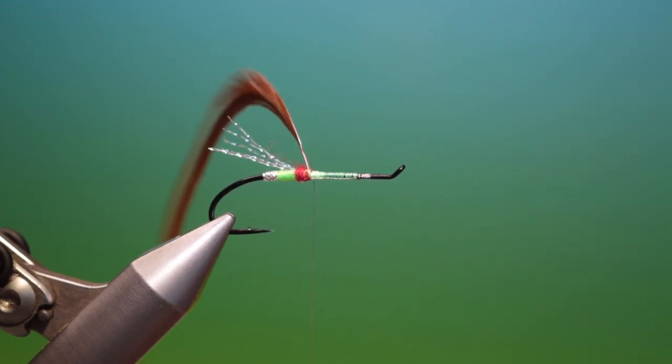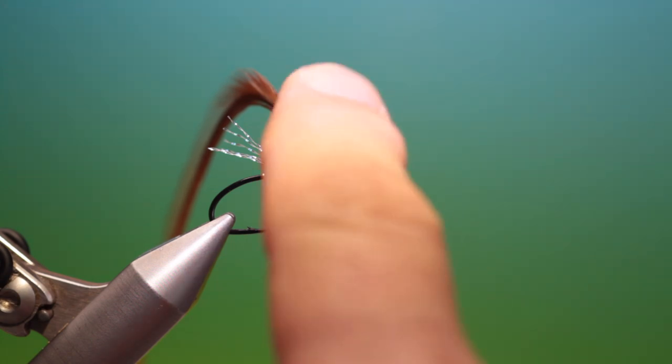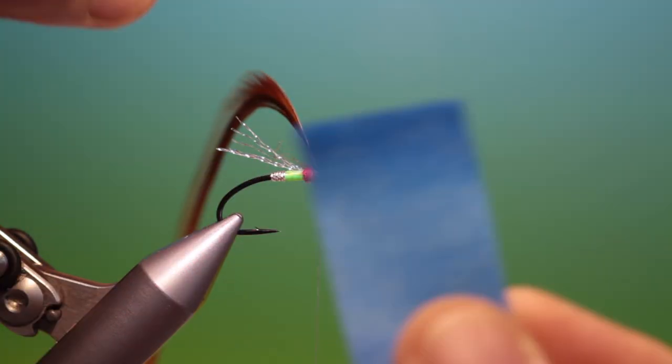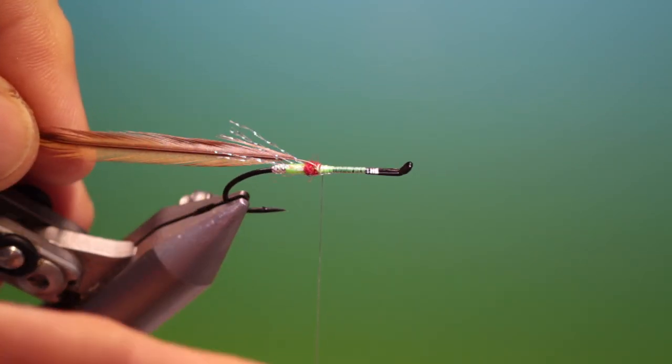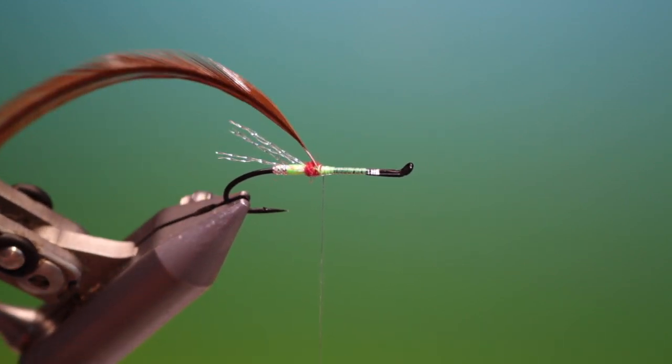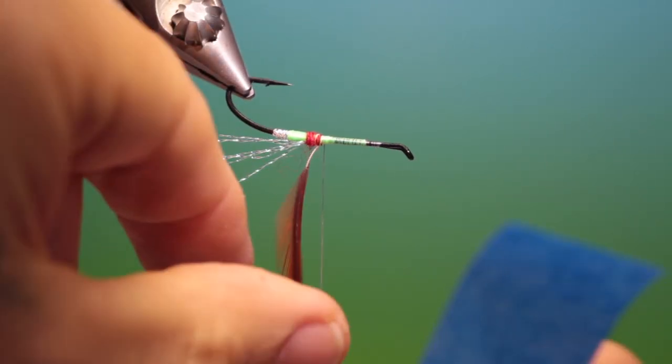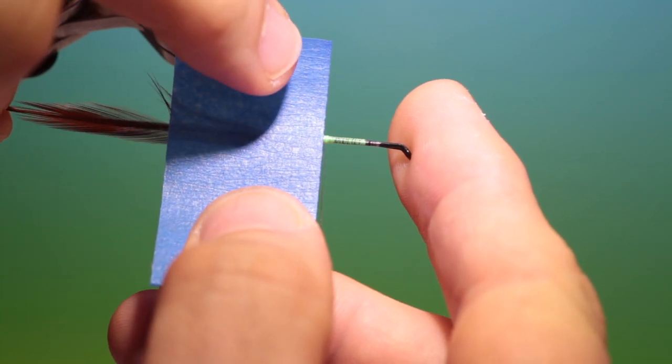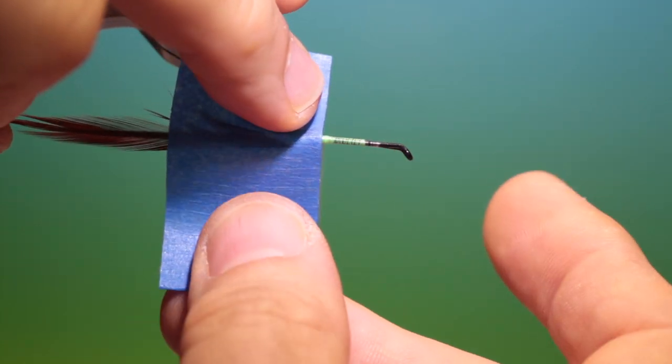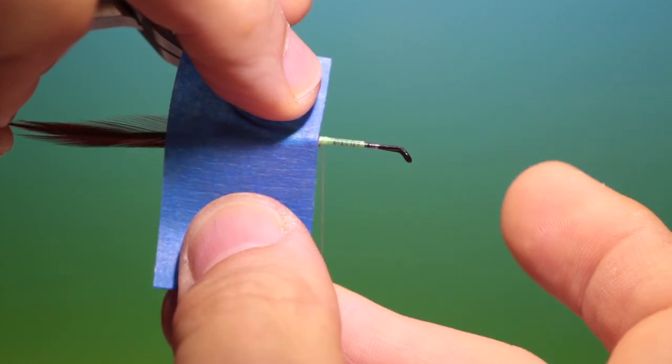And we'll spin our thread anti-clockwise so it becomes flat otherwise your dyneema will cut through the deer hair. So what we need now is a little length of masking tape, we fold our hackle back. If we turn our vice upside down and keep our thread hanging.